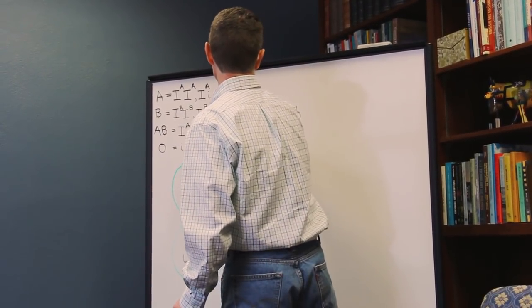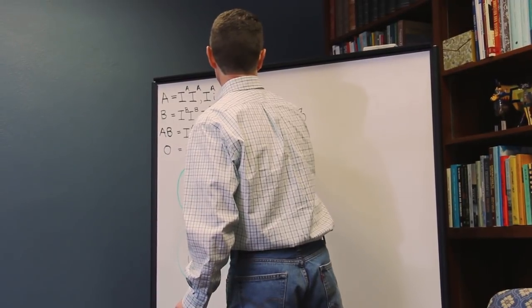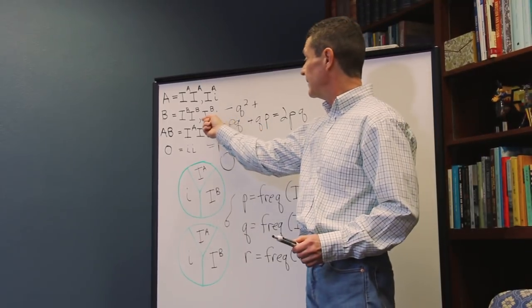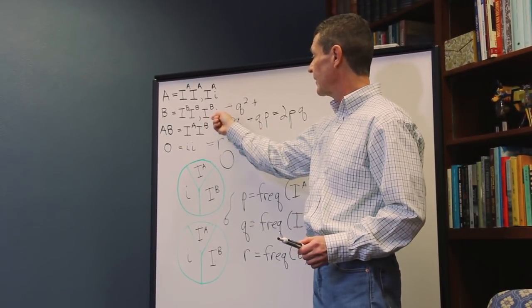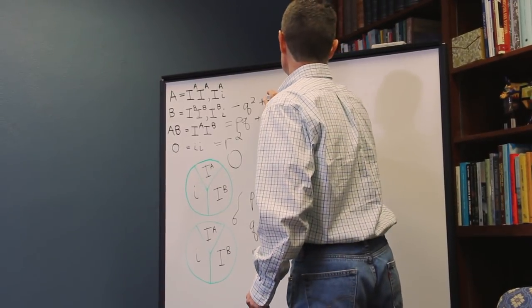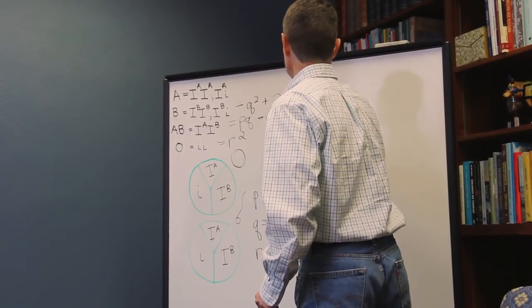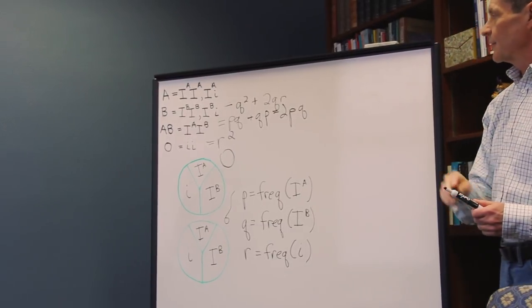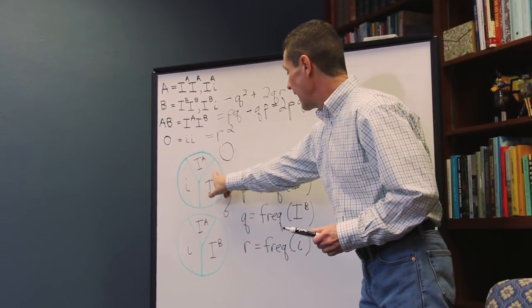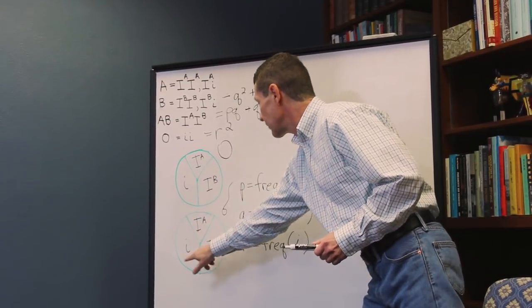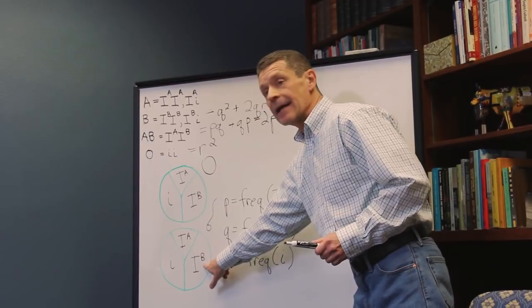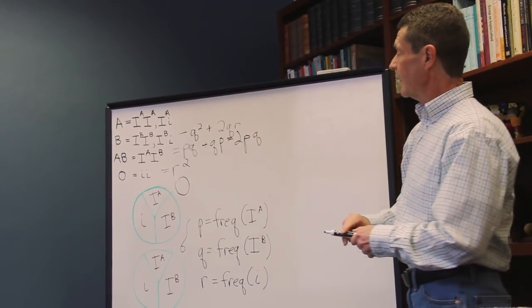Plus I have to take into account that I can have a B blood type that's a heterozygote. And by exactly these same arguments, this is 2 times Q times R. There's two ways to get that heterozygote with an IB egg and a small i sperm or with a small i egg and an IB sperm. So, that's why 2QR.